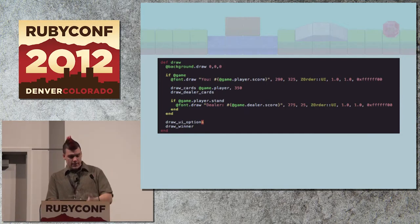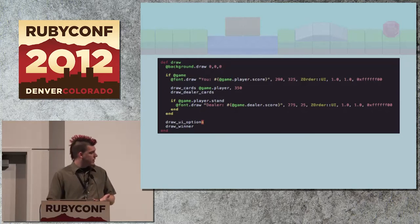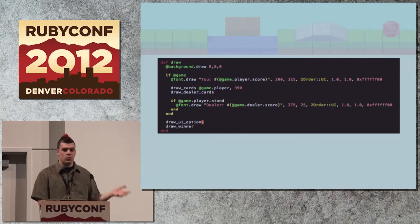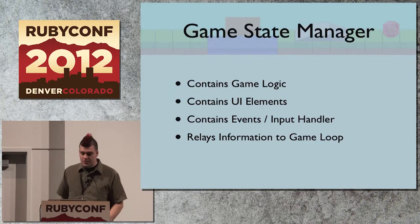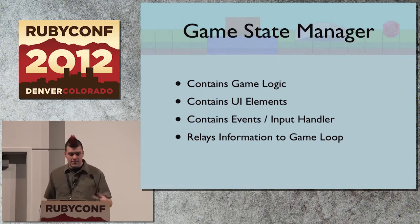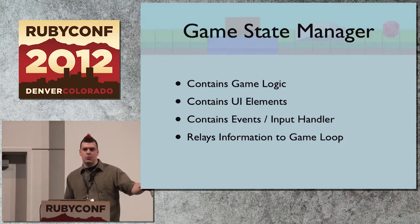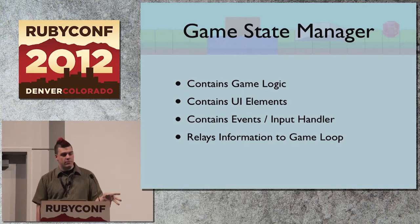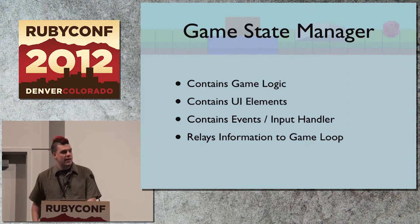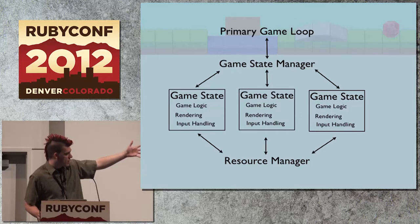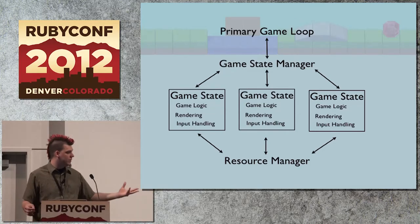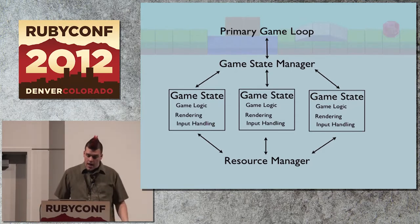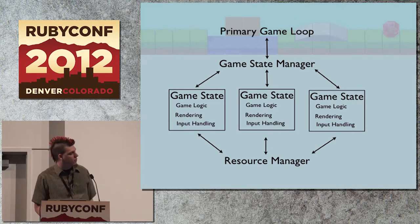This is even further emphasized when you look at the draw method for rendering — we've got a lot of 'if game', 'if player.stand', changing up the rendering context based on game state. This is where the addition of a game state manager is really necessary. It contains all your game elements, game logic, and UI elements, so you can say: I'm at this point in the game, this is all of my relevant information, let's load it on. The ideal scenario is your primary game loop interfaces with your game state manager, you have multiple game states containing game logic, rendering, and input handling, and a resource manager spreading that across all game states. Looking at blackjack, which is rather small, we've already started running into all of this additional boilerplate.